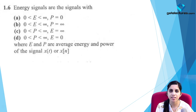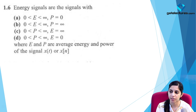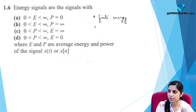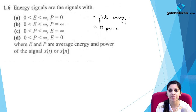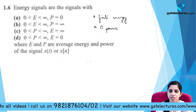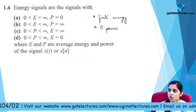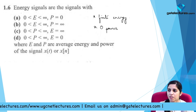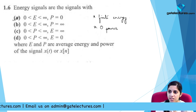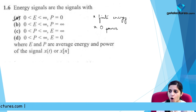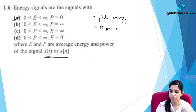Now they're asking about energy signals. Energy signals are signals which have finite energy and zero power. Finite energy means energy lies between zero and infinity. Power is finite only if energy is infinite; once energy is finite, power becomes zero. This holds for both continuous time and discrete time signals. The correct option is option A.